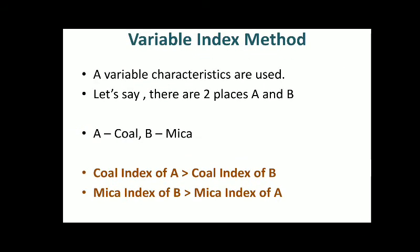Next is the variable index method. The fixed index method uses the same type of index, but in the variable index method we use different types of characteristics. For example, if place A is a coal region and place B is a mica region, we cannot compare them on the same index. So the coal index of A will always be greater than the coal index of B, and in the same way the mica index of B will be more than the mica index of A.